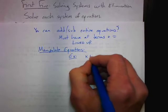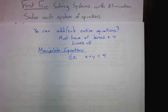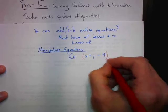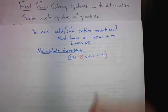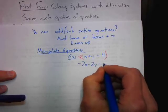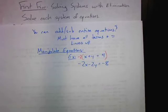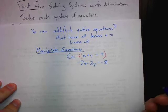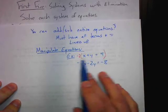For example, let's say you had x plus y equals 4. You could multiply that entire equation by negative 2. We can manipulate this entire equation by multiplying the whole thing by negative 2, and we'd end up with negative 2x minus 2y equals negative 8. That's totally legitimate.